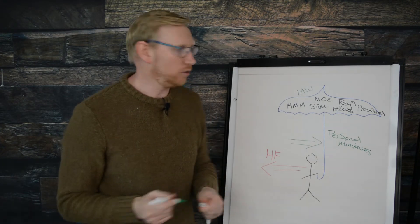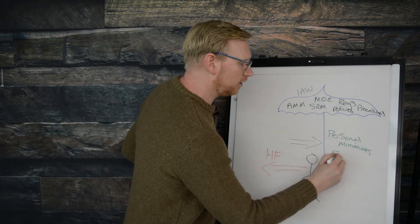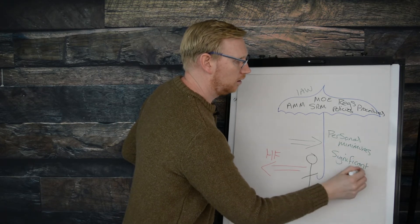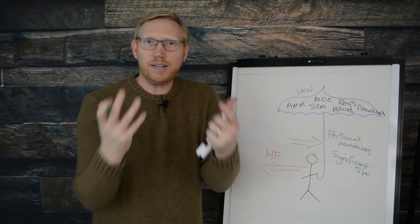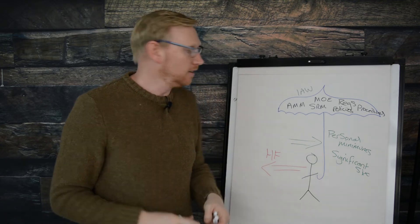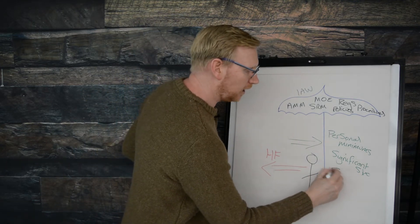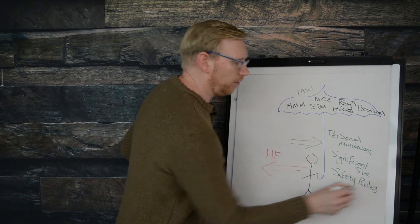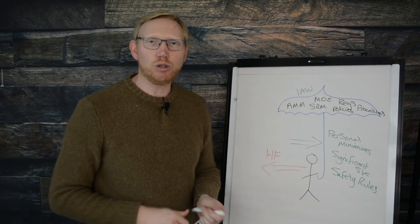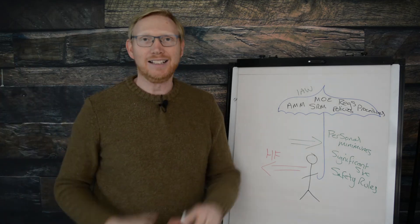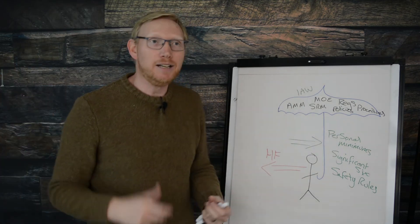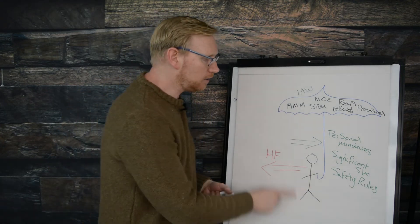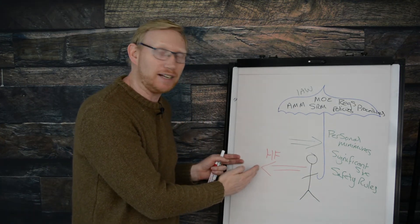Another company I've worked with have a significant six, six things that they will work towards or keep in mind. Other companies have safety rules. An organization I work with has 10 safety rules and they're put up around the hangar and the building and that's fantastic. But what does it mean to an individual?